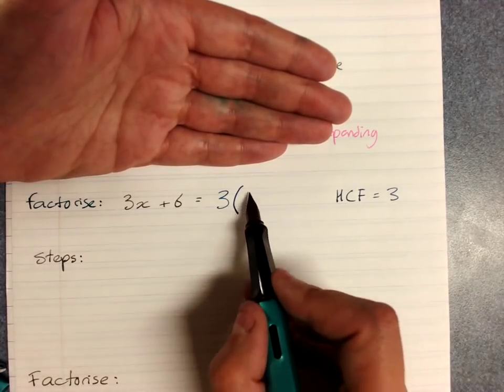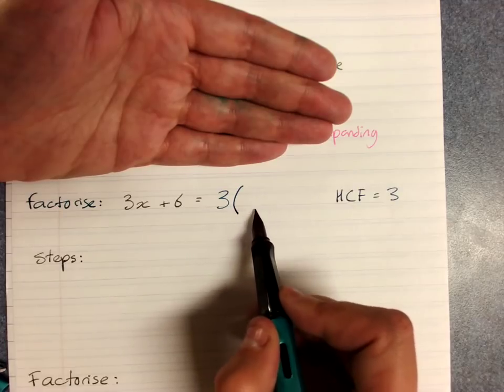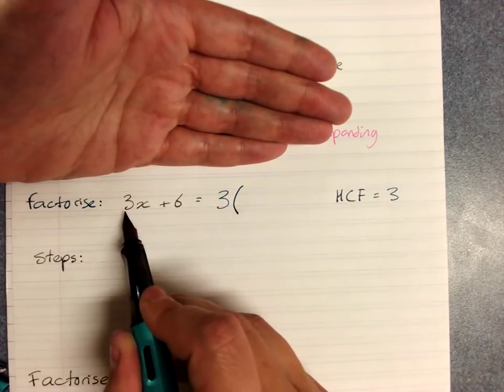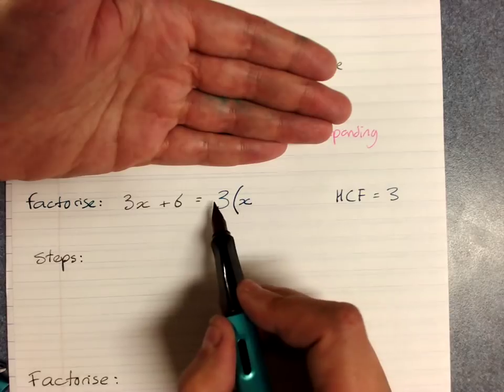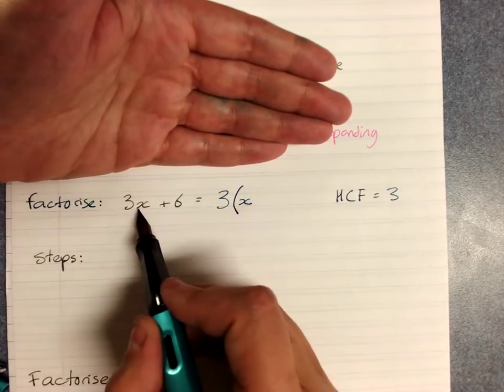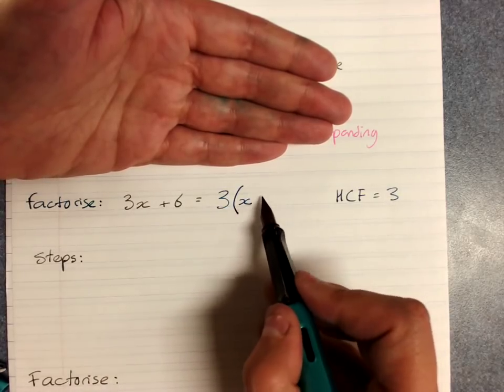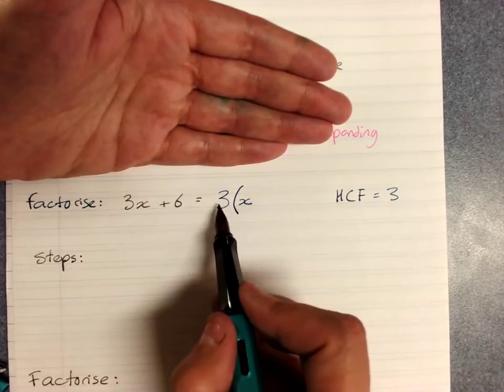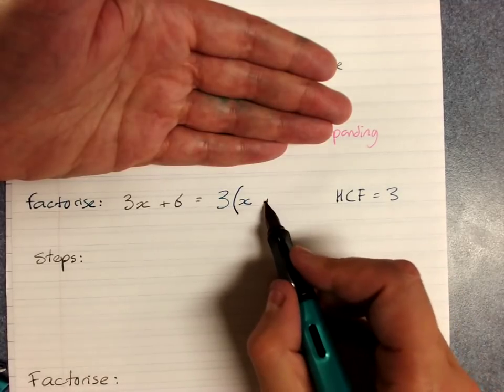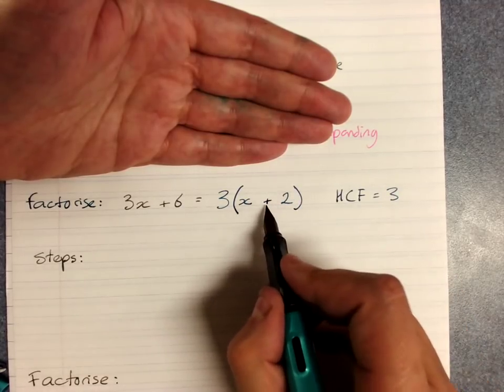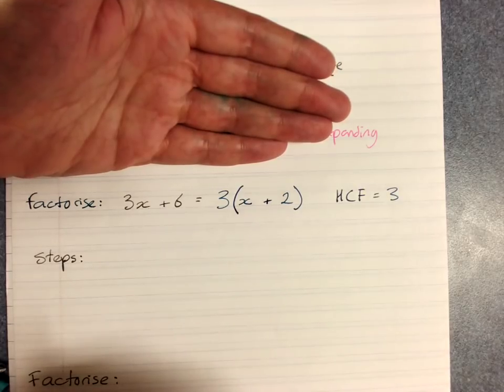And what you'd ask yourself is, this is whatever I times 3 by to get 3x. So it has to be x, because 3 times x is 3x. And the second term is whatever I times 3 by to get 6. Well, that would be 2. And we know it's plus because it has to get plus 6.